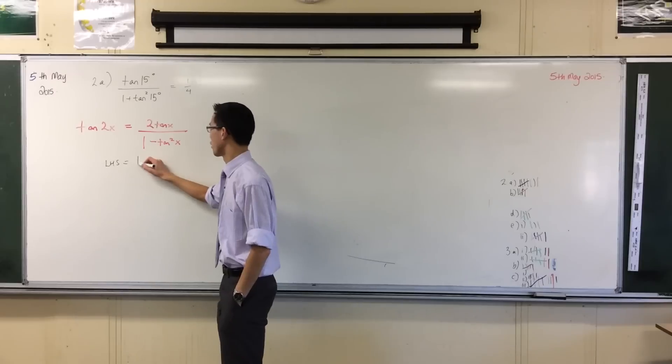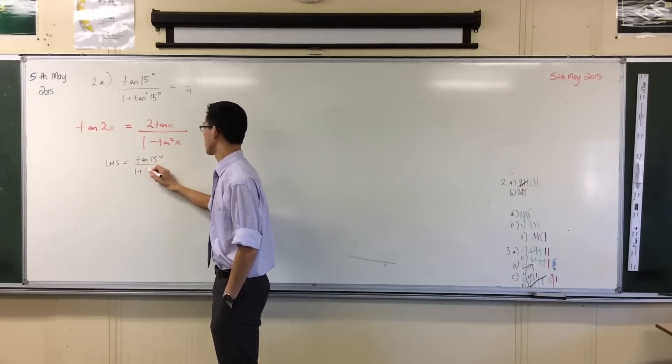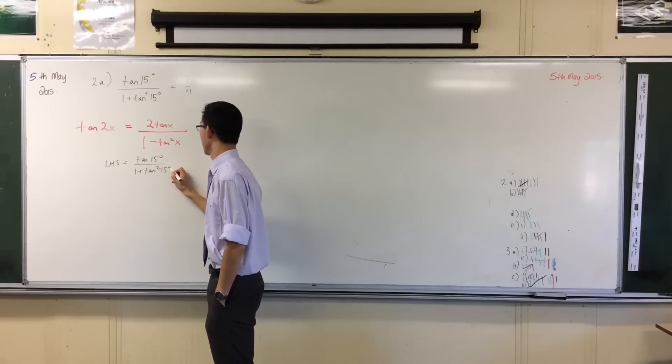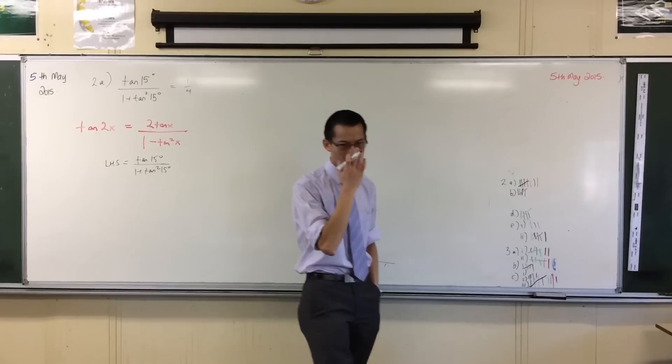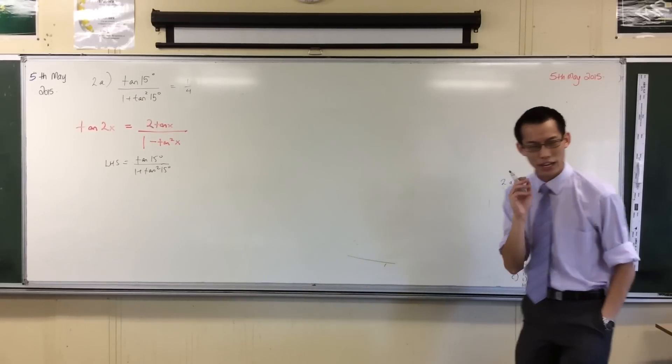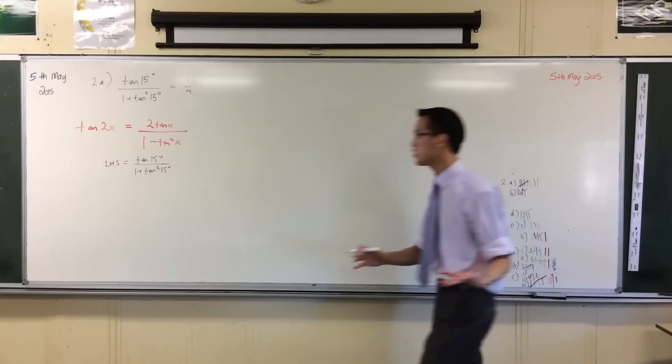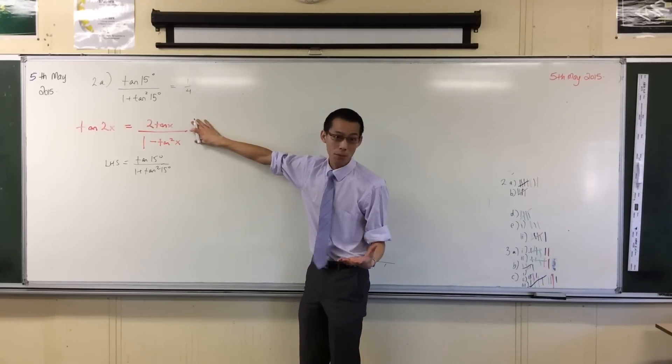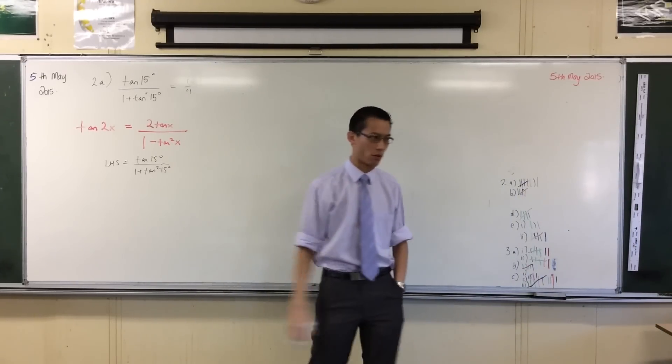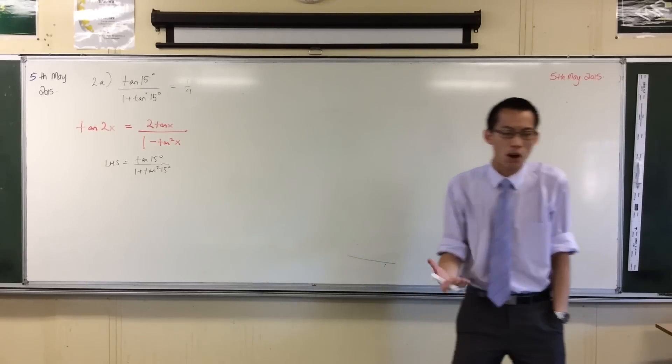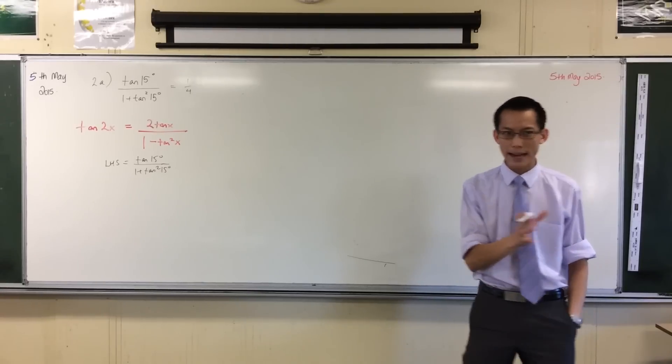The left-hand side is clearly the obvious one, so I'm going to go tan 15 over 1 plus tan squared 15. Now, when you look at this, that 1 plus tan squared should be jumping out at you, especially when you've disqualified this as an option.